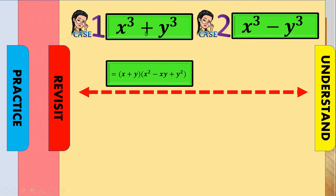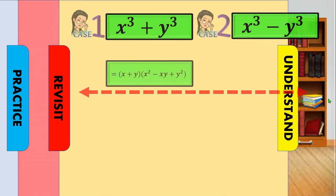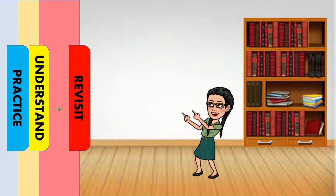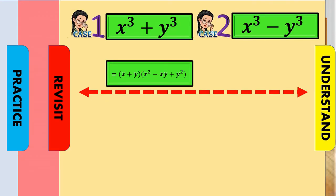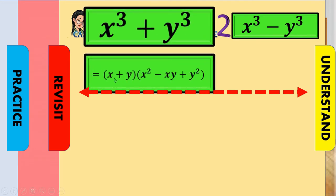Now let's factor out our binomial. There are patterns to the factors of the sum of two cubes. Our binomial contains the cube root of the first term and the cube root of the second term. Our trinomial contains the square of the first term in our binomial, the product of the first and second term, and the square of the last term. The operations are: addition (same as given), subtraction (opposite of given), and always addition.